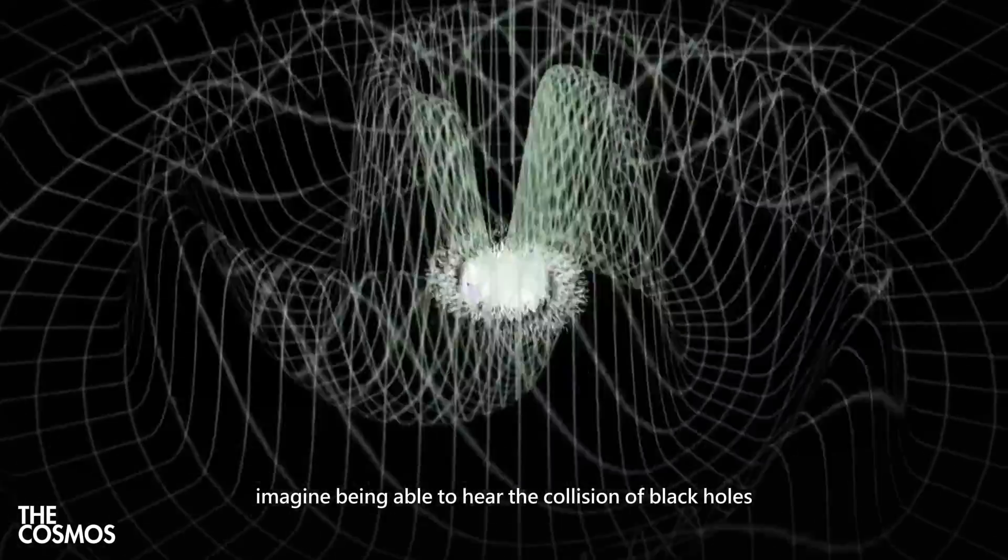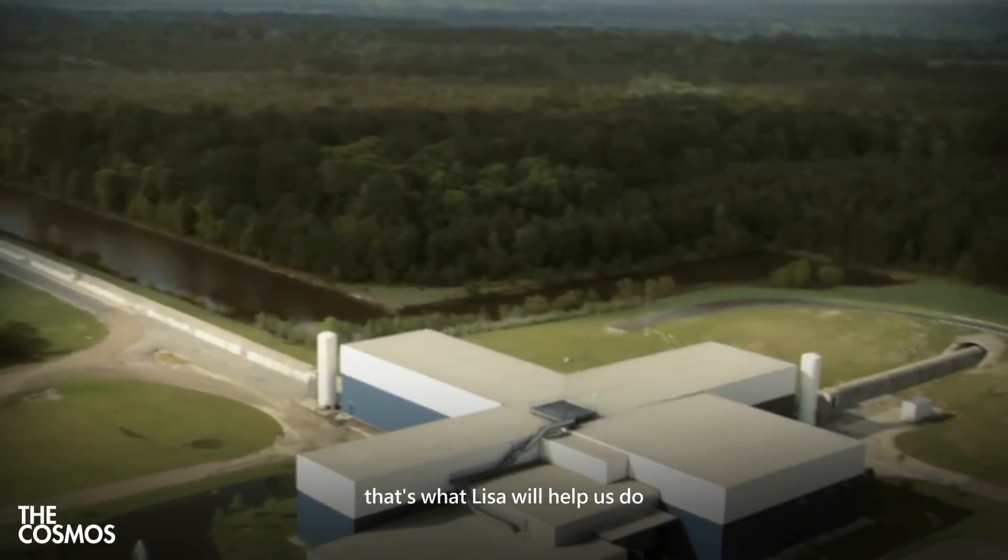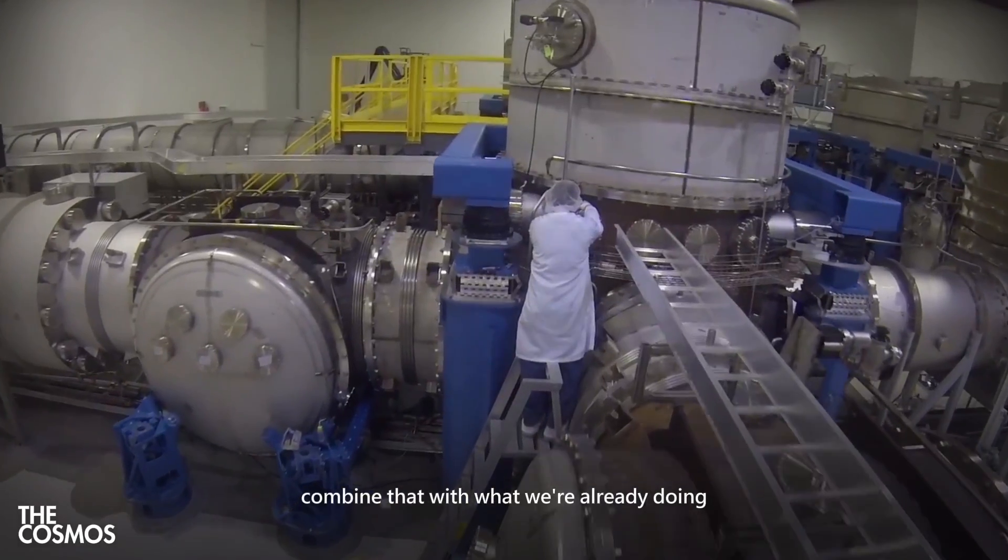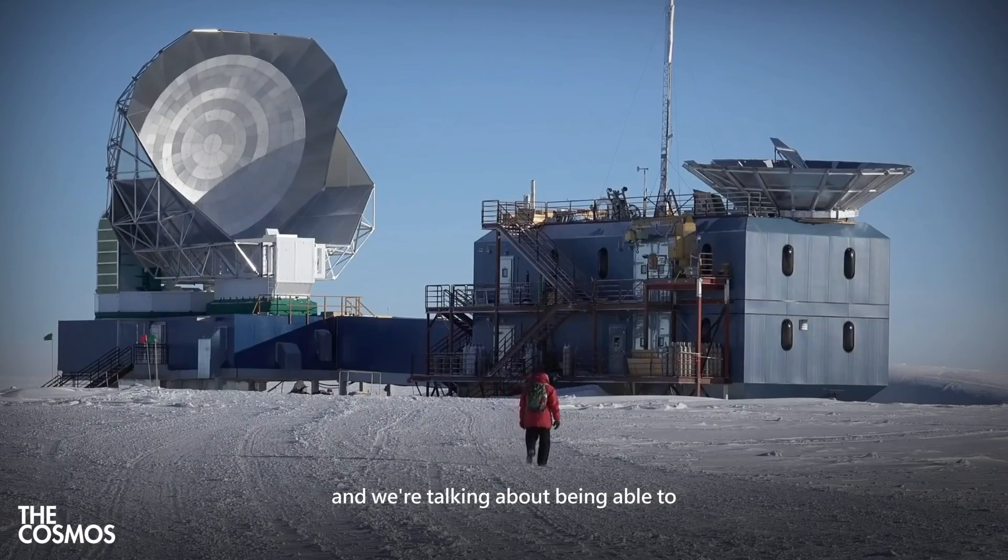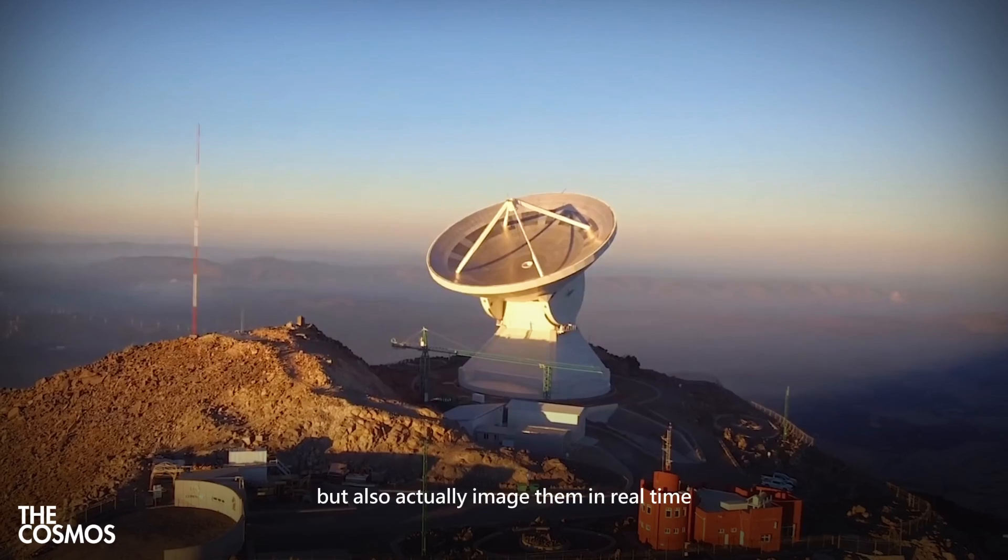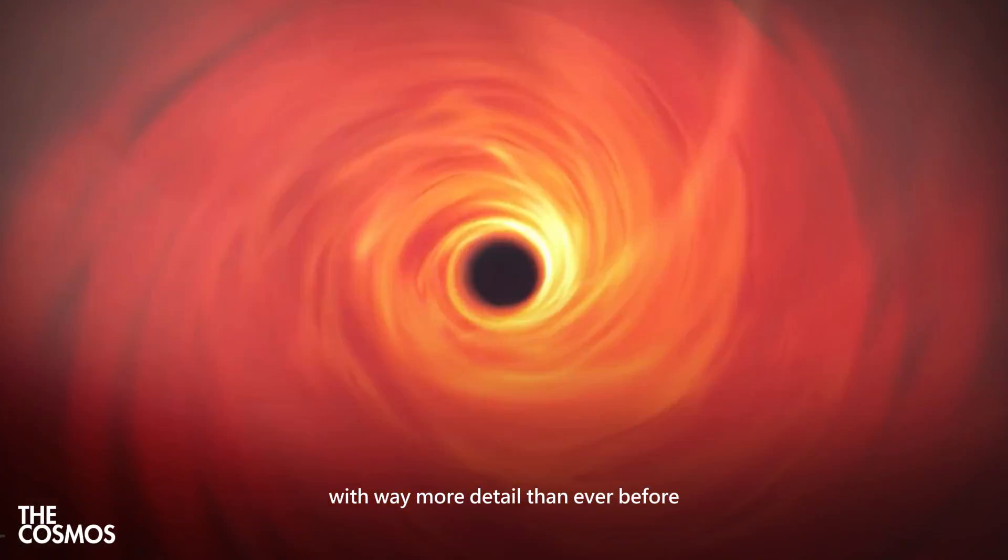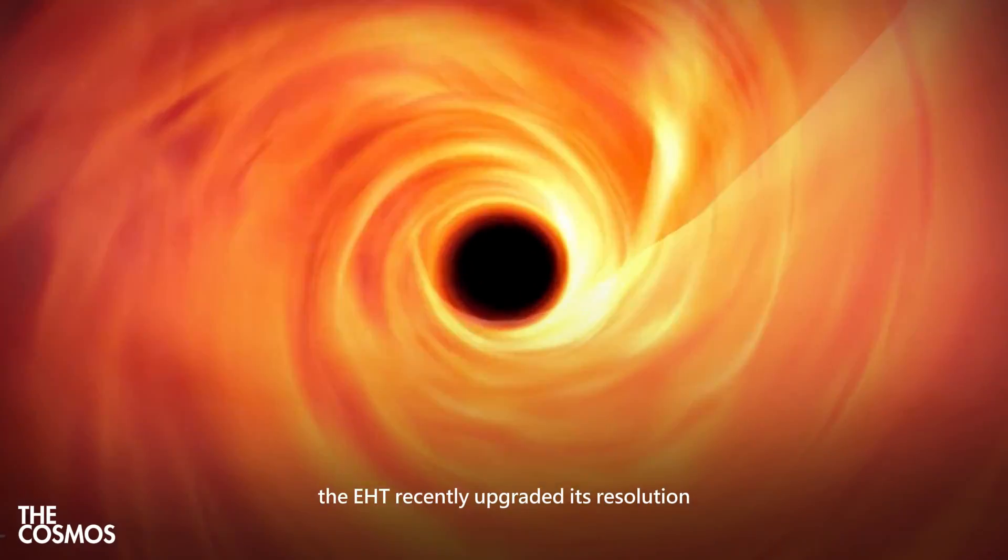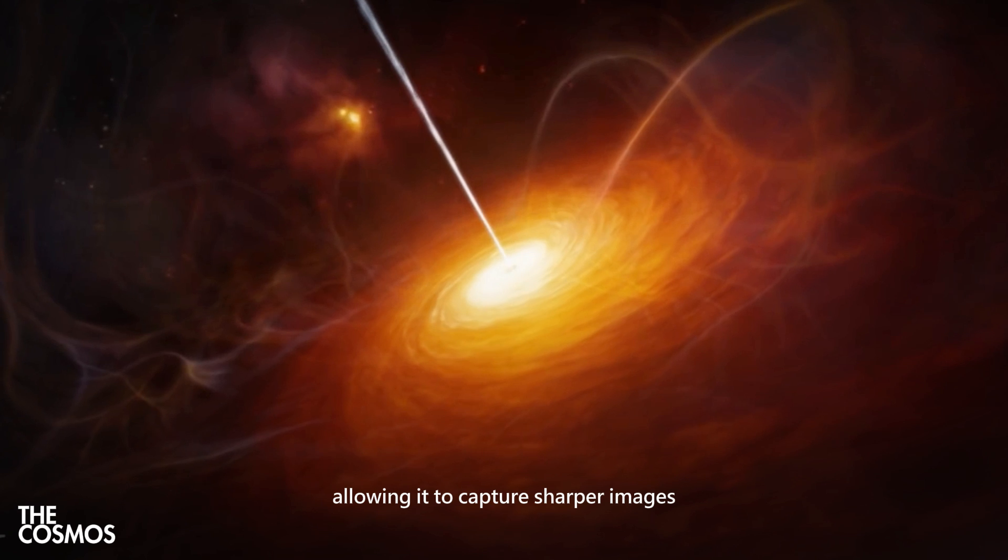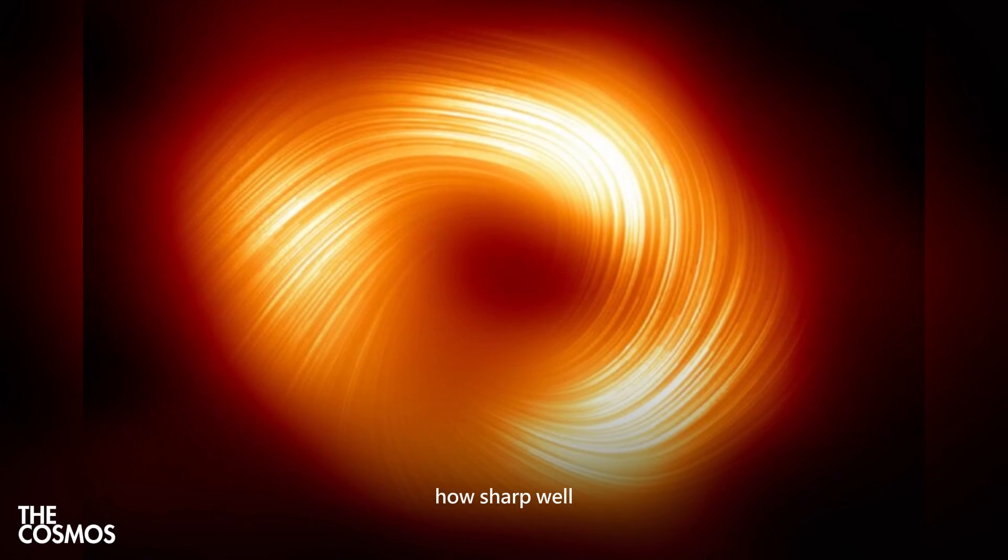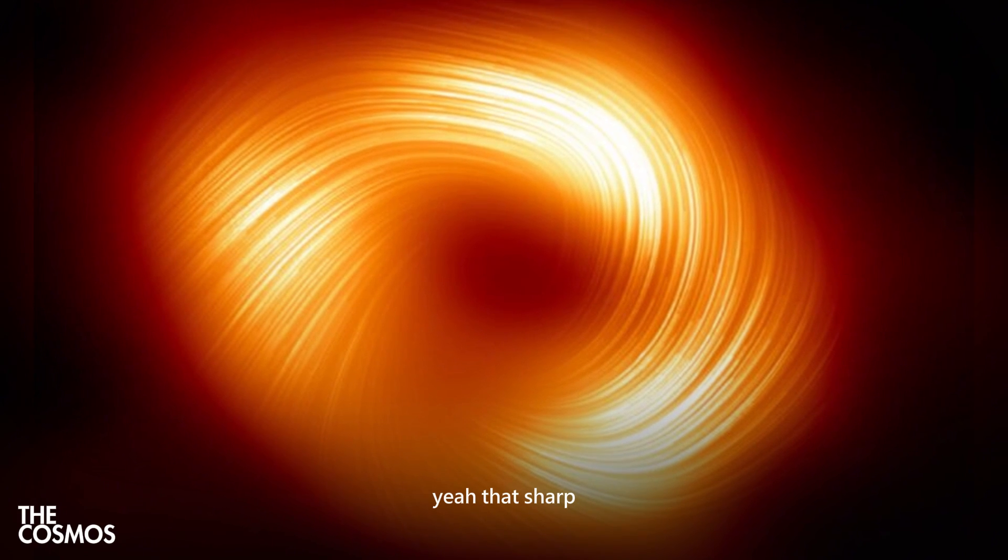Imagine being able to hear the collision of black holes. That's what LISA will help us do. Combine that with what we're already doing with the Event Horizon Telescope, and we're talking about being able to not only detect these mergers, but also actually image them in real time with way more detail than ever before. The EHT recently upgraded its resolution, allowing it to capture sharper images. How sharp? Well, it's like being able to spot a bottle cap on the moon from Earth. Yeah, that's sharp.